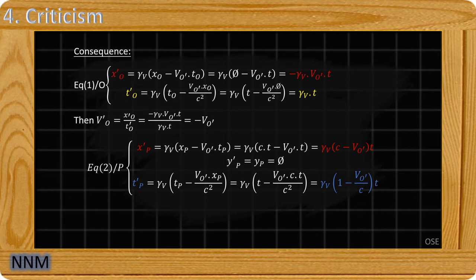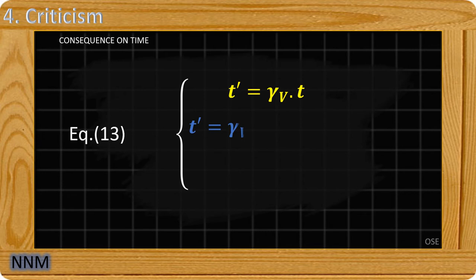He obtains three different times for T'. It's absurd. So the Lorentz transformations are false.